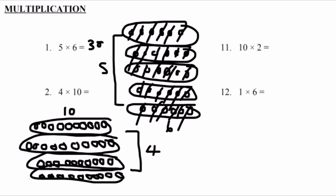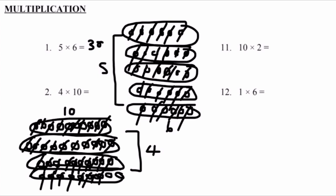Let's add it all together to find our final answer. Counting all the circles, we count up to 40. 10 plus 10 plus 10 plus 10 equals 40, and 4 times 10 equals 40. So our final answer is 40.